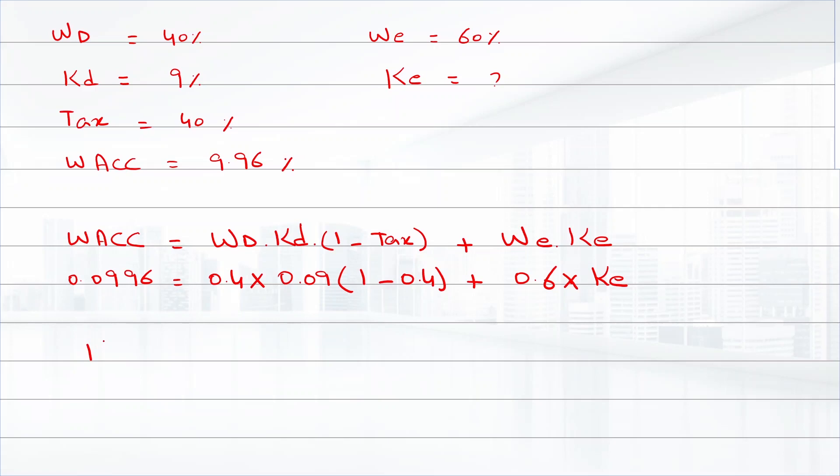The cost of equity equals 0.0996 minus 0.4 times 0.09 times 0.6, all divided by 0.6. Therefore, the cost of equity is 13%.